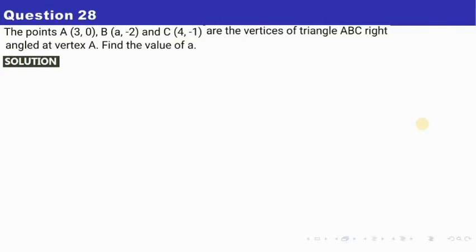So let me take the last question that is question number 28. Question says, the points A (3, 0), B (a, -2) and C (4, -1) are the vertices of a triangle ABC right angled at vertex A. So basically this is a right angled triangle which is 90 degree at vertex A. So you need to find the value of a here.